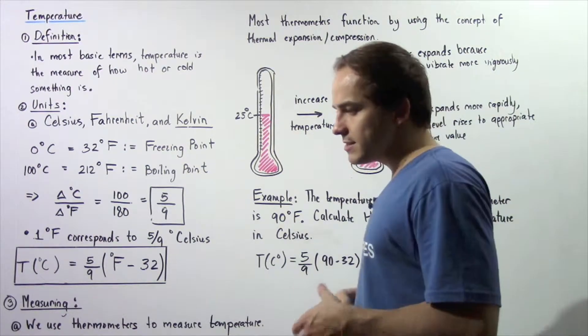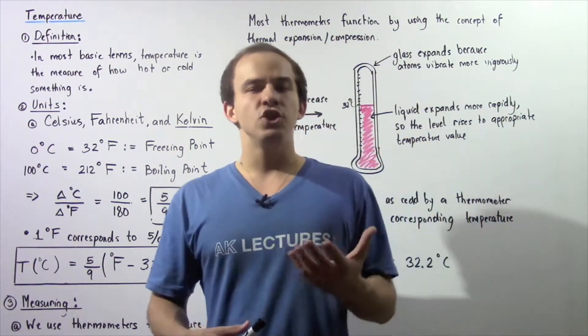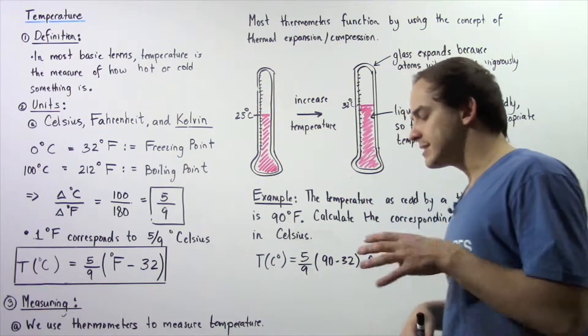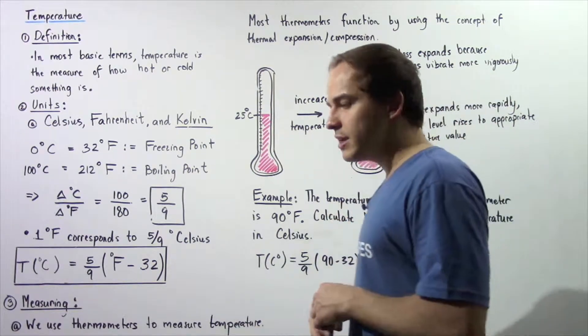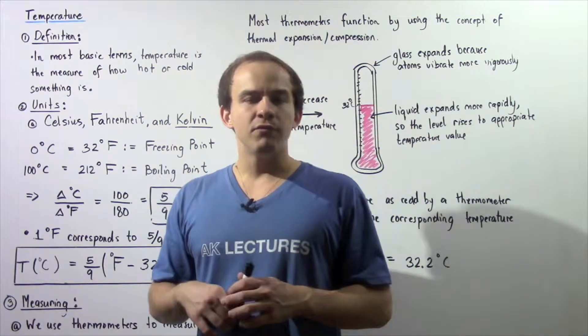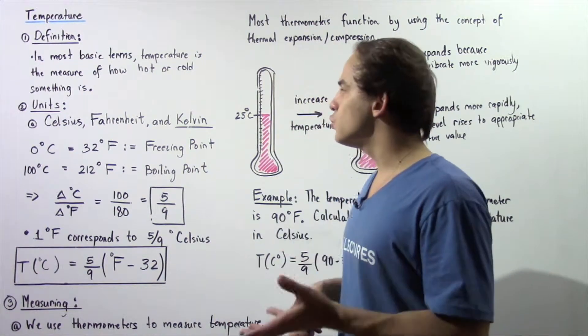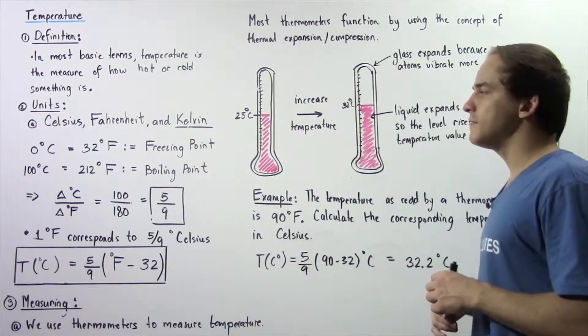The Celsius scale is most commonly used worldwide. The Fahrenheit scale is primarily used in the United States, and the Kelvin scale is used by the scientific community.